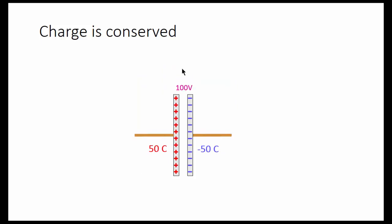If we take the battery away, the 100 volt difference remains because the charge has no way of escaping from here. And we have a difference of 100 coulombs between the two sides.